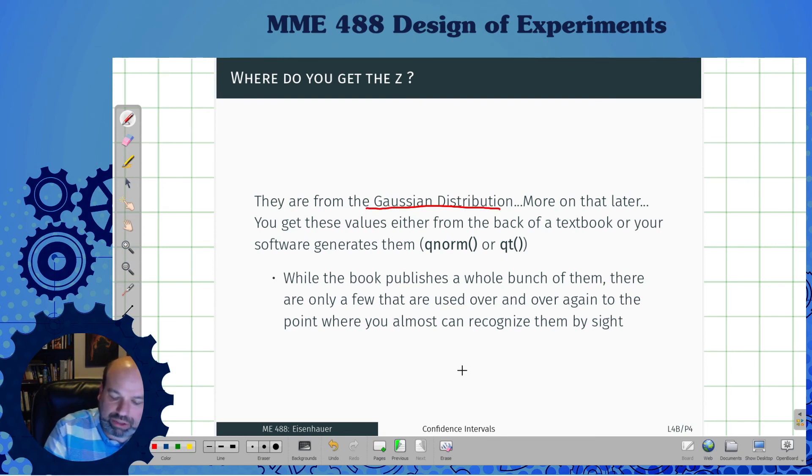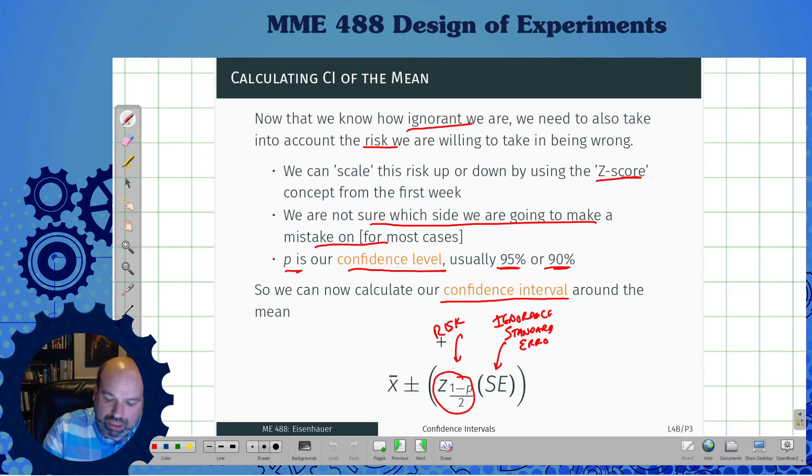Where do we get those from? We get them from the Gaussian distribution, and more on that later. We get these values from the textbooks, or if you're using R, you can get them with these functions. Other systems have different functions to calculate those. While book publishers publish a whole bunch of them, there's only a few that are ever used, and you're going to get to know them and recognize them by sight. You're going to use these and find these special z's to give us our risk tolerance of how off we want to be.